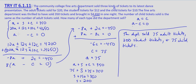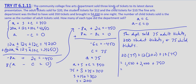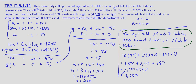Let's verify. The third equation: 75 minus 75 equals 0. The first equation: 75 plus 75 plus 200 equals 350. Both check out. For the second equation: 20 times 75 plus 12 times 200 plus 10 times 75 equals 1,500 plus 2,400 plus 750 equals 3,900 plus 750, which equals 4,650. Our solution checks out. The department sold 75 adult tickets, 200 student tickets, and 75 child tickets.